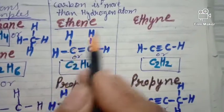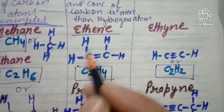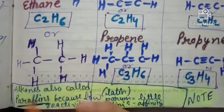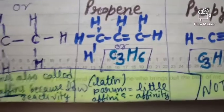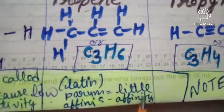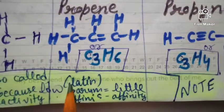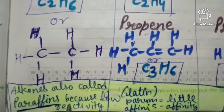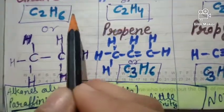Hydrocarbons are named with root words: meth, eth, prop, but, pent, and so on. Alkanes are also called paraffins. The word paraffins comes from 'parum' meaning little and 'affinis' meaning affinity, so paraffins have little affinity, meaning they are less reactive. That is why alkanes are also called paraffins. I hope you liked my video — please like, share, and subscribe. Thank you.